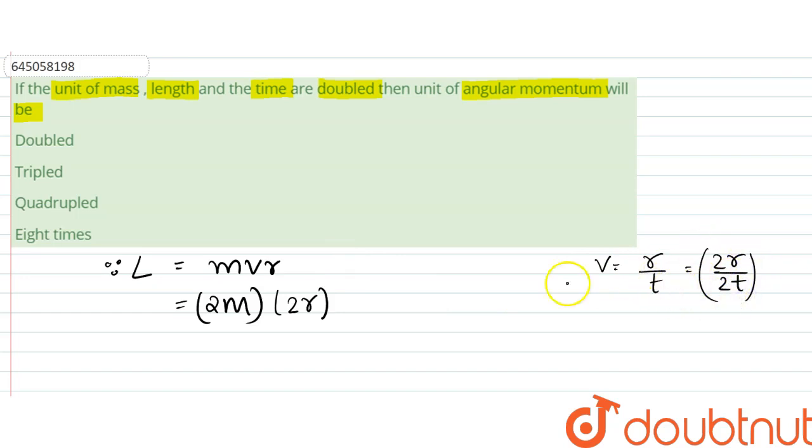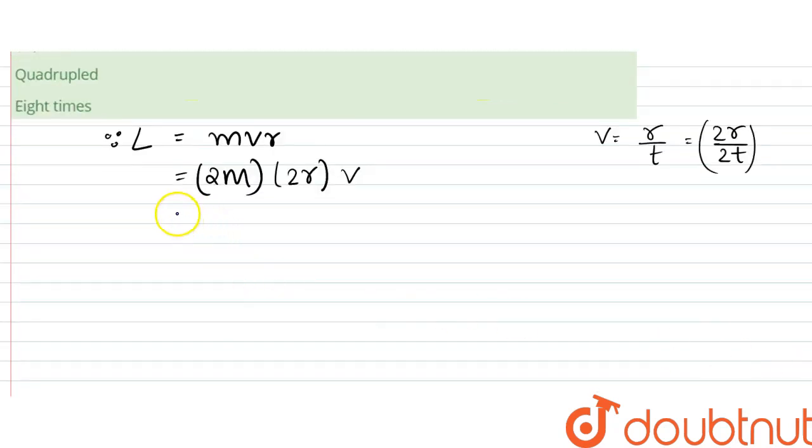So it would become 4 times m v r, right. That is L dash. This is L dash.